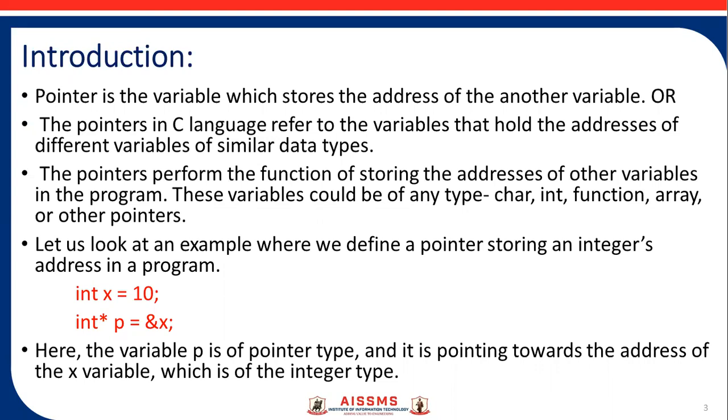Let us look at an example where we define a pointer storing an integer's address in a program. For example, int x = 10 and int* p = &x. Here, the variable p is of pointer type, and it is pointing towards the address of the x variable, which is of the integer type.